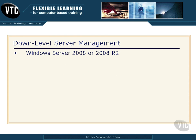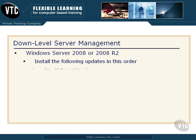Let me give you the steps. What you really want to do in the real world is work with Server 2008 or Server 2008 R2 — these are the simplest to manage. The farther back you go, the more involved it gets. If you're trying to do down-level server management on Server 2008 or 2008 R2, you have to install the following updates in the order given. First, install the .NET Framework 4.0 on that remote server.